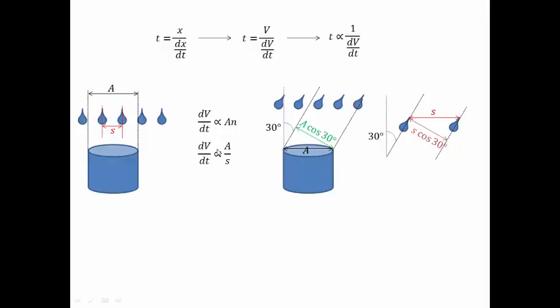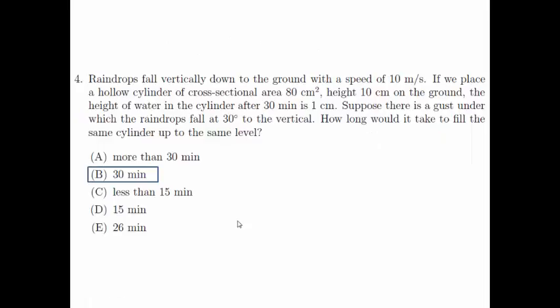Now, if you look back at this proportionality relation, there is actually no change in dV/dt because both the cos 30 degrees terms got cancelled out. So likewise, there will be no change in the collection time. Therefore, the answer to this question is B, 30 minutes. Thank you.